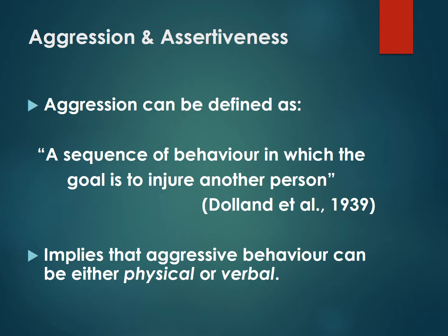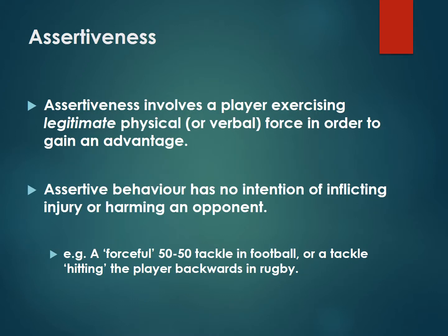Here's another definition — a sequence of behavior in which the goal is to injure another person. It's an older definition but important because it implies that aggression can be physical or verbal, so you could be trying to hurt somebody through words. Assertiveness, by contrast, is where we're trying to exercise legitimate physical or verbal force to gain an advantage — for example, a forceful tackle in football or rugby. There's sometimes a fine line between what's within the rules and what's outside them, but assertive behavior has no intention of hurting the other person.